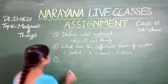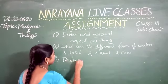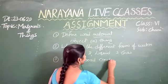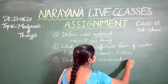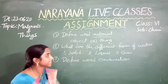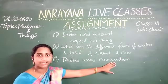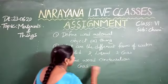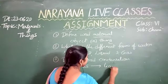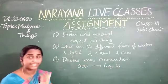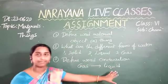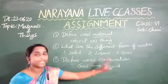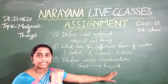Third question: define the word condensation. Condensation is nothing but the process of changing the gaseous state of a substance into its liquid state. Generally, the gaseous state of a substance can be converted into its liquid state — this process is called condensation.